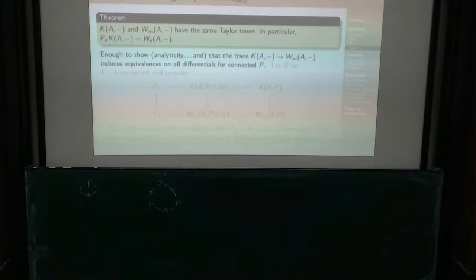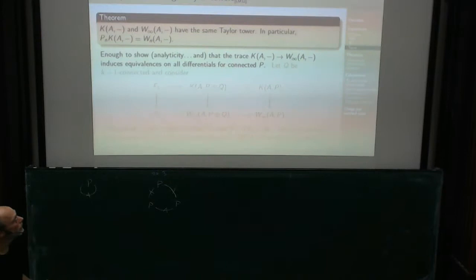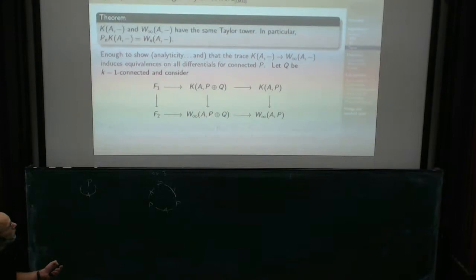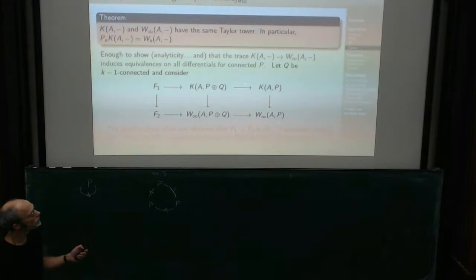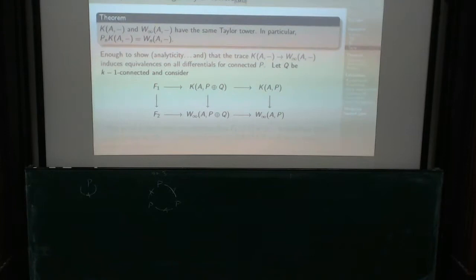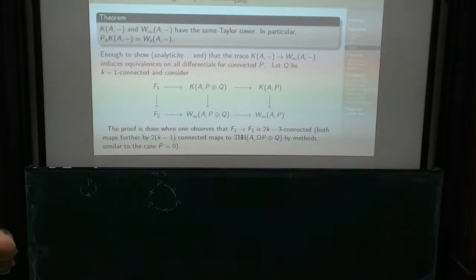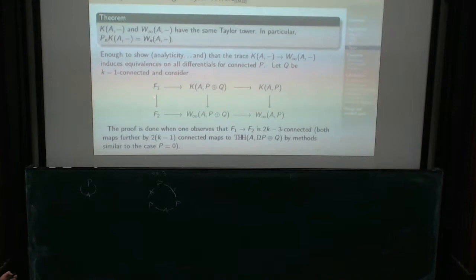We're going to look in a very small neighborhood — the connected fellows, so they are very close to zero but not necessarily equal to zero. I look at what happens when I look at the difference between P plus Q, where Q is awfully small, and P, which is connected. Then you look at the correspondence between K-theory and W, and it's the fibers that we're interested in to see the differentials. By an analysis very similar to the case when P is equal to zero — when you're calculating the differential at zero — you see that this map is highly connected. If Q here is (k-1)-connected, this map is (2k-3)-connected, and you get that by comparing to some concrete topological Hochschild homology.